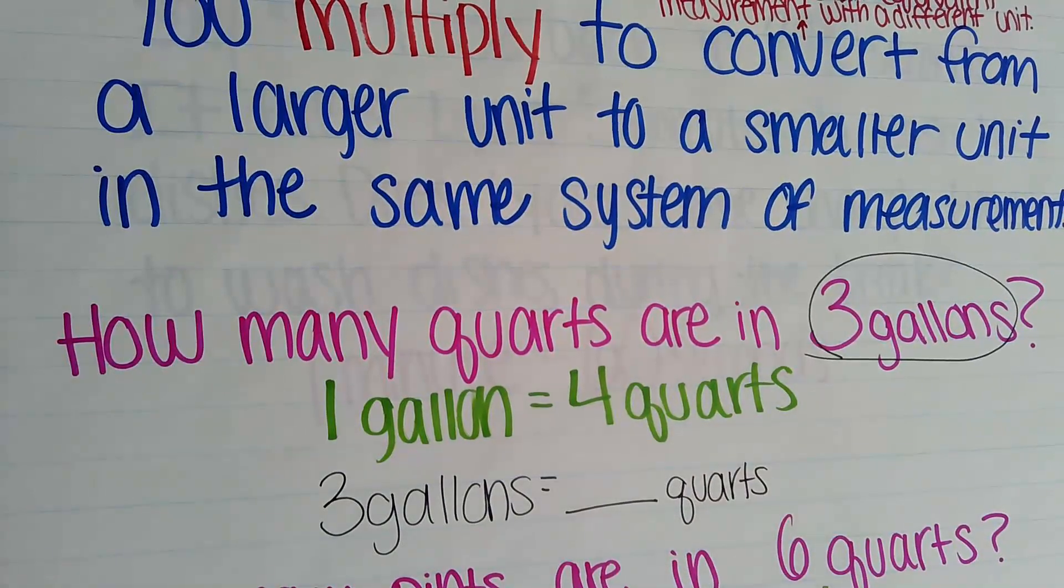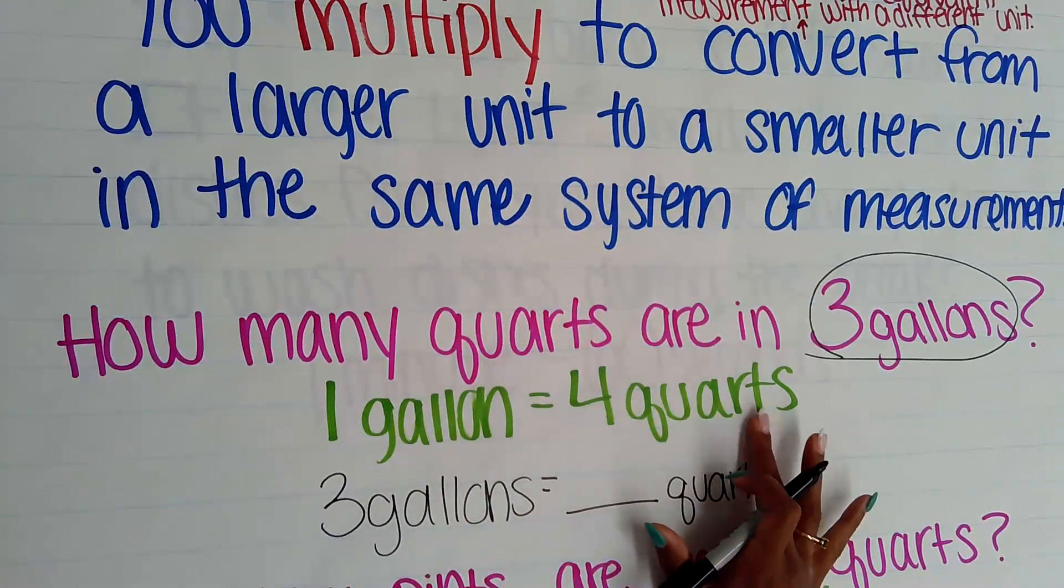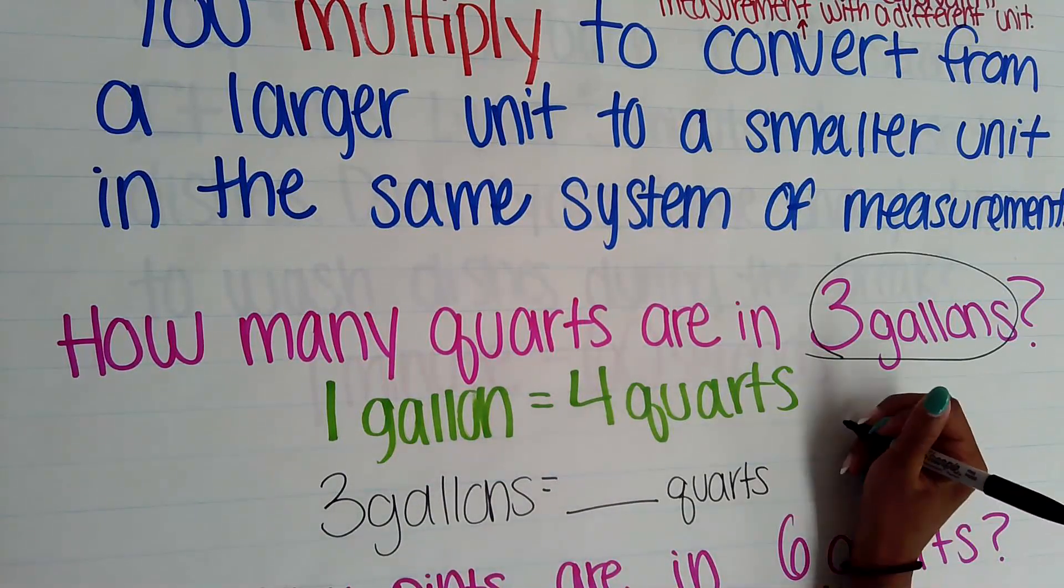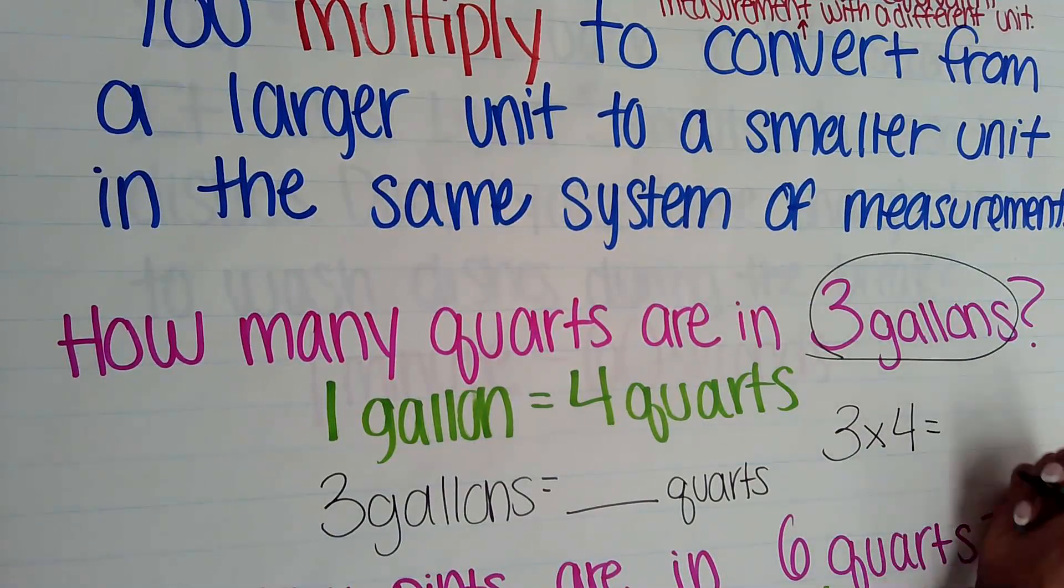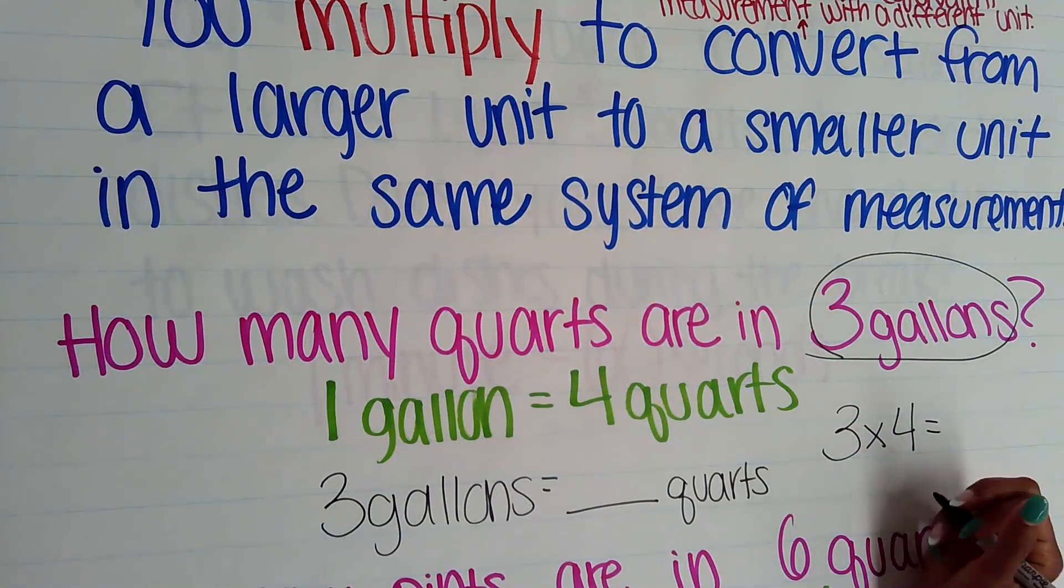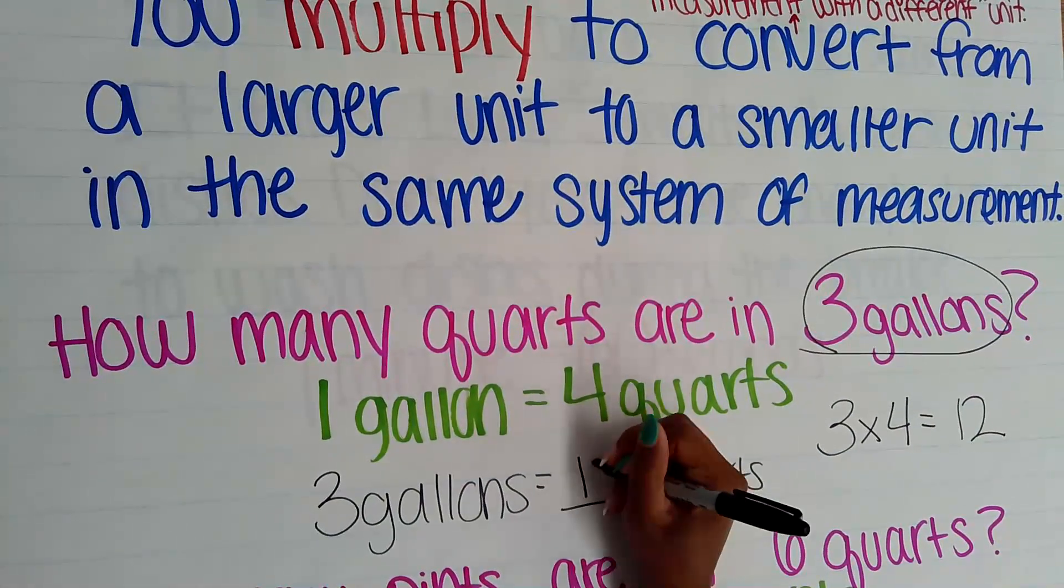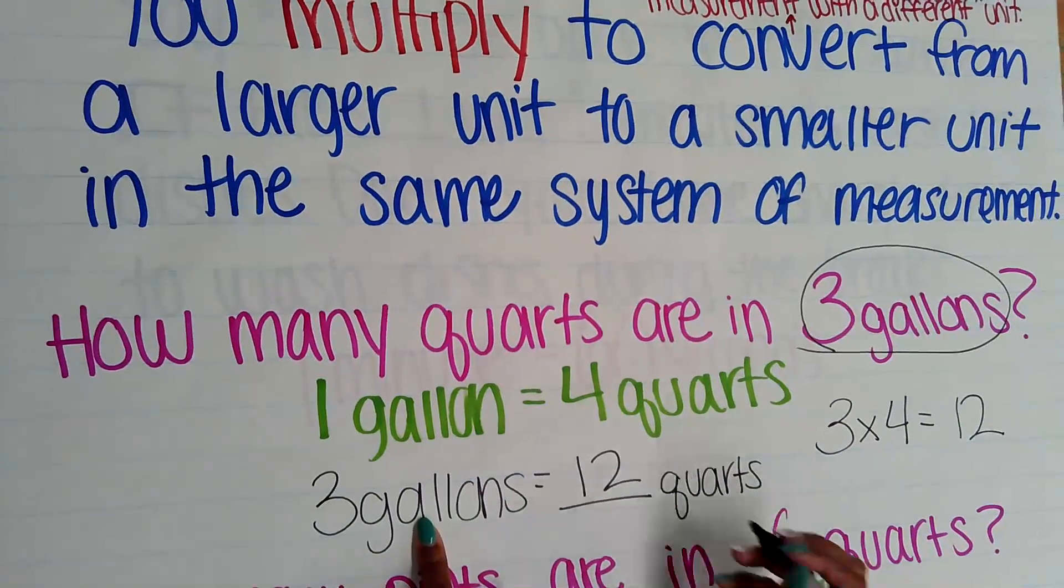Again, we're using multiplication because this one group has 4 quarts. We now have three times as many—we have three more groups. So I would have to use the equation 3 times 4 to figure out how many quarts I have. I know 3 times 4 gives me 12, so for this conversion, 12 quarts is equivalent to my 3 gallons.